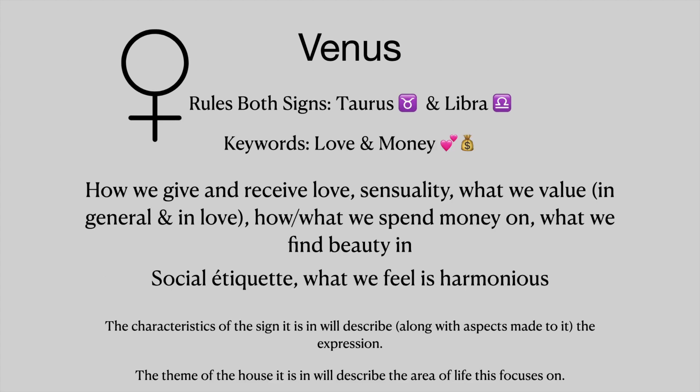Venus rules both Taurus and Libra, and the keywords are love and money. This is how we give and receive love, our sensuality, what we value in general and in love, how and what we spend money on, and what we find beauty in. It also describes our social etiquette and what we feel is harmonious.